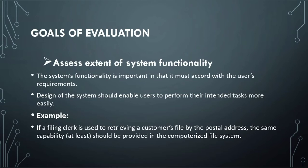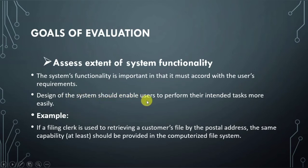System functionality is important — the user specifies functional requirements for the system. The system functionality must occur in accordance with the user requirements. The design of the system should enable the user to perform the intended task more easily. For example, a filing system is used for retrieving a customer file by postal address.